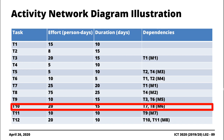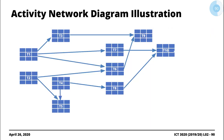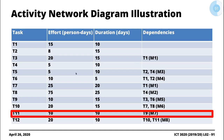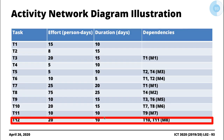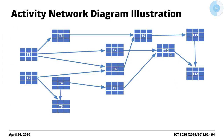T10 has a dependence on T7 and T8, so arrows point to T10. T11 has a dependence on T9, so there is an arrow from T9 to T11. Finally, T12 is dependent on T10 and T11, so arrows from T10 and T11 go to T12. This completes our dependency tree.